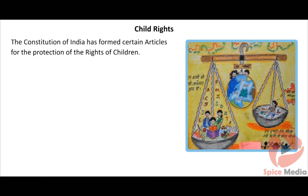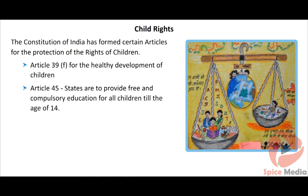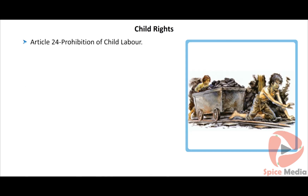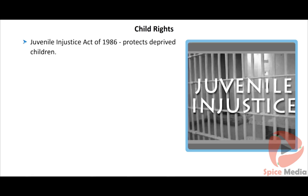The Constitution of India has formed certain articles for the protection of the rights of children against all kinds of exploitation. Article 39(f) provides for the healthy development of children and all facilities. Article 45 states that all state governments must provide free and compulsory education for all children till the age of 14. Article 24 prohibits child labor. The Juvenile Justice Act of 1986 protects children deprived of adequate care and helps reform them.